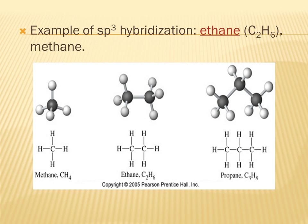An example of sp2 hybridization is ethane. The diagram shows examples: the first is methane, the second is ethane, and the last one is propane. Thank you very much.